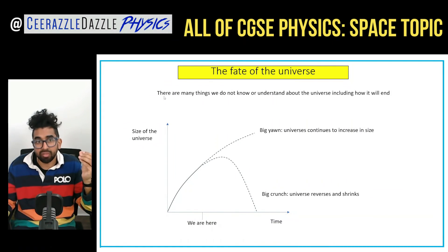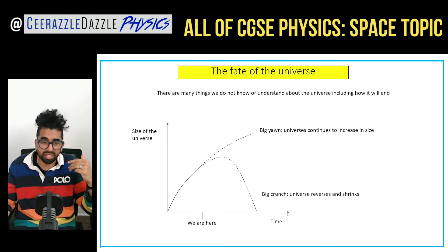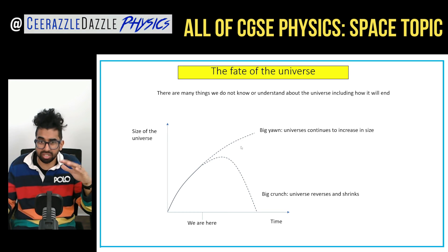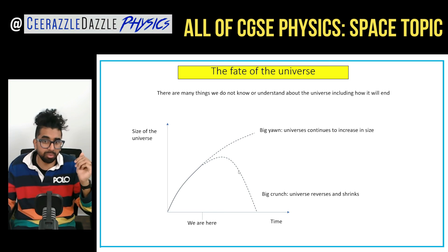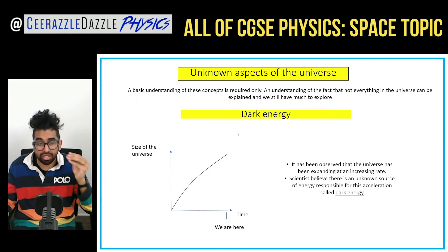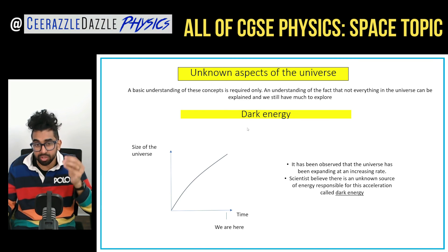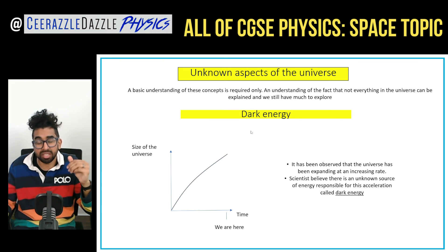The fate of the universe. We don't fully understand how the universe will end, but if we plot a graph of the size of the universe versus time, we're roughly here now. It could go down the route of the 'big yawn' — continuing to increase in size — or it could go down to the 'big crunch' where it collapses back inwards on itself. The universe is actually expanding at an accelerating rate, and physicists aren't sure what is responsible, so they have called it dark energy.